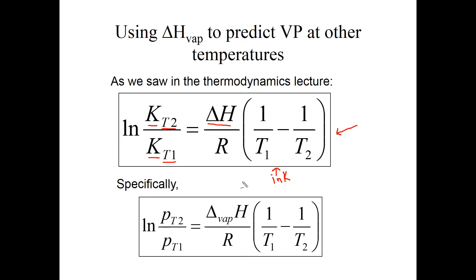You can use this type of equation to correct any equilibrium constant for temperature. For vapor pressure specifically, the equation gives the pressure at one temperature versus another, using delta H of vaporization multiplied by the difference in reciprocal temperatures. This type of equation you're going to use over and over again. This particular form applies when the compound is a liquid. If the compound is a solid, you use the same equation but substitute delta H of sublimation instead of delta H of vaporization.